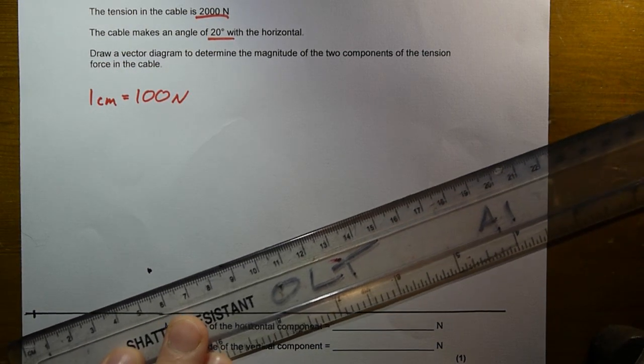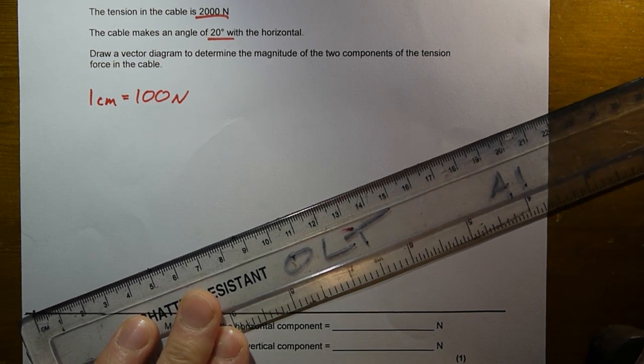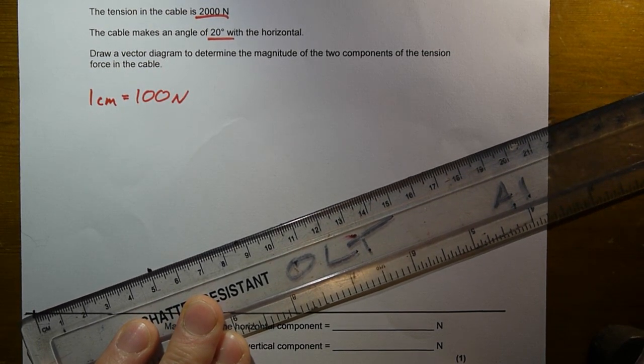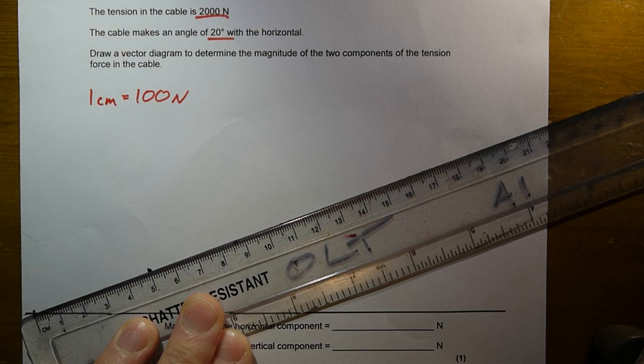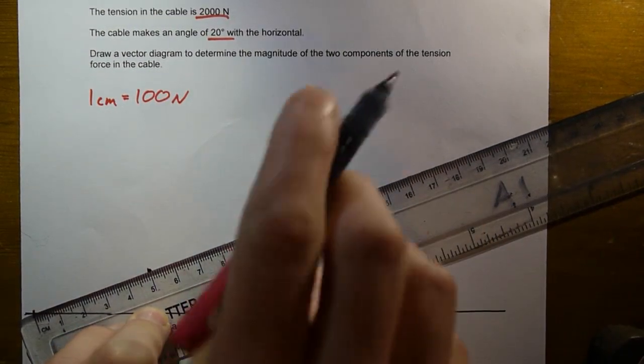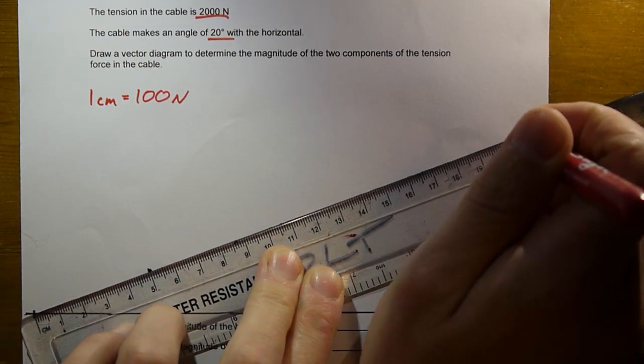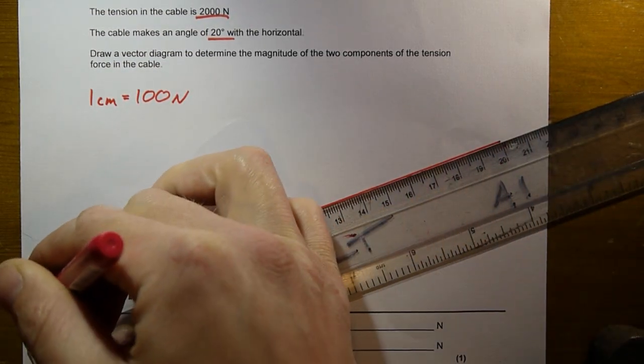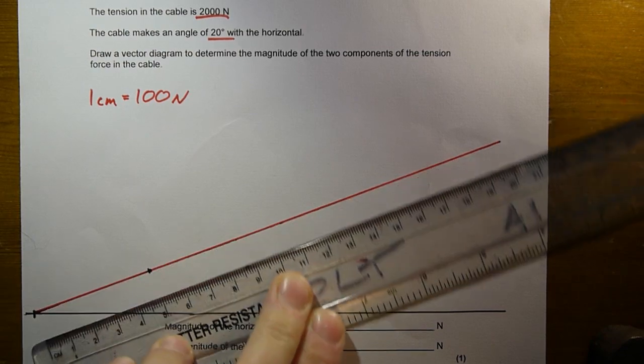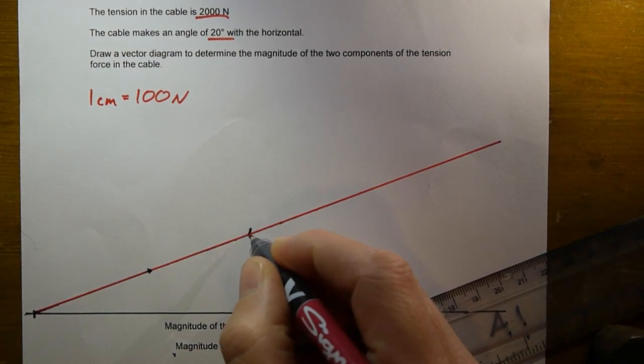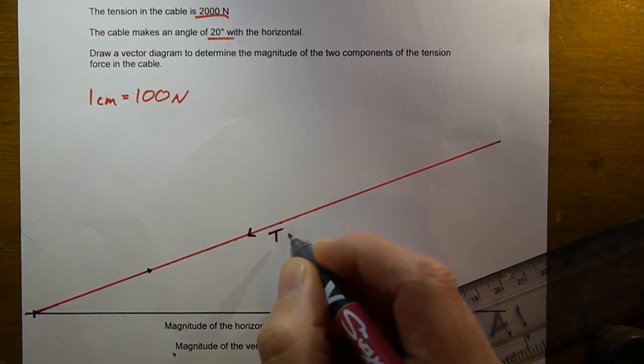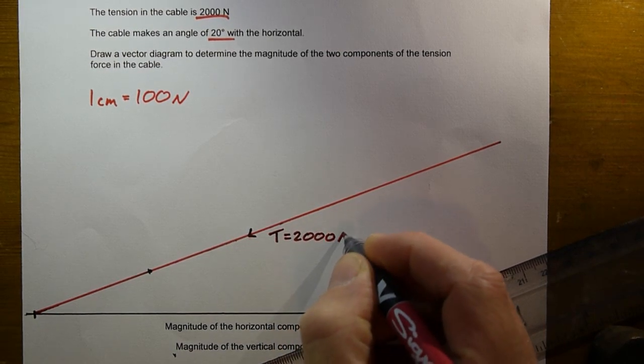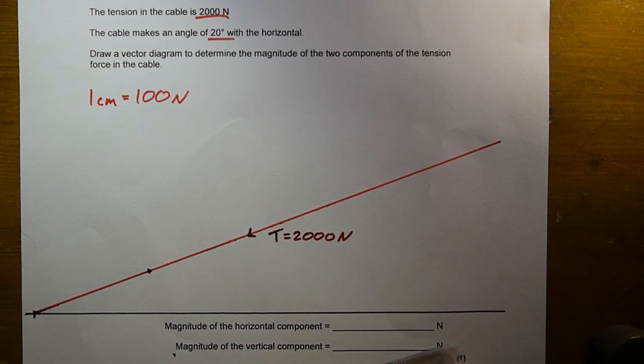So my scale is 1 centimetre is 100 newtons, so my line that represents that tension force of 2000 newtons will be 20 centimetres long. Now I can just about fit that onto my page. Let's draw that, that's 20 centimetres there. Draw that through. And that is my tension force. And I can just put an arrow on that, and label that T equals 2000 newtons.